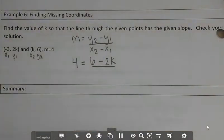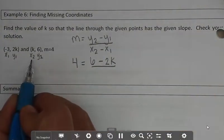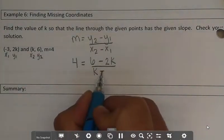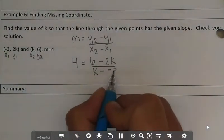over x2 is k, minus x1, which is negative 3.